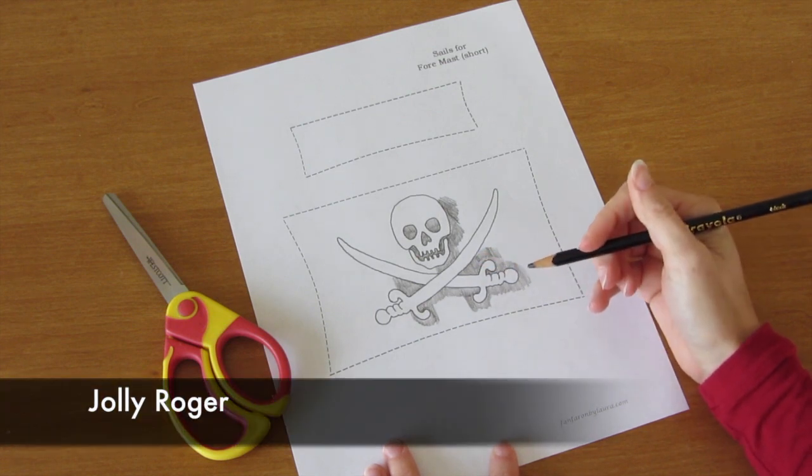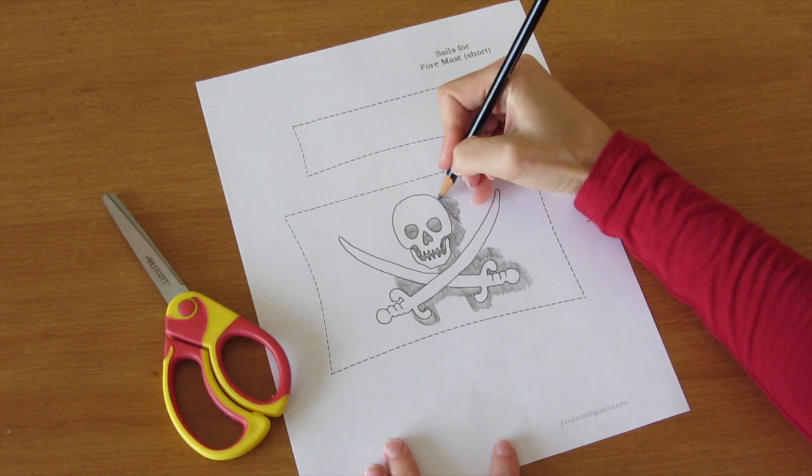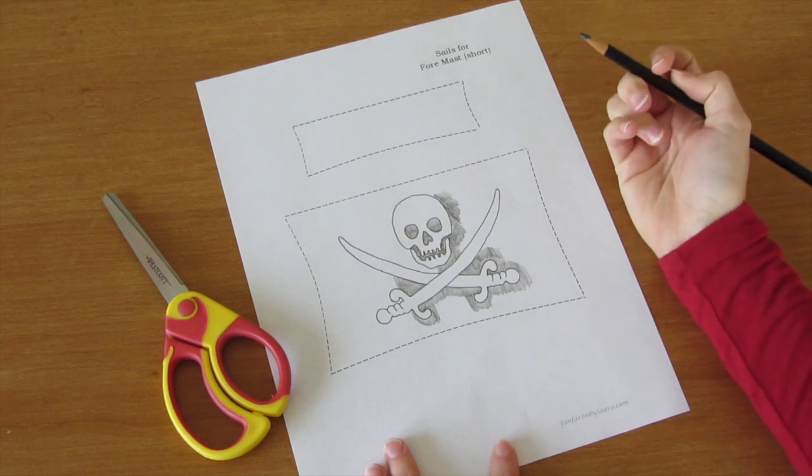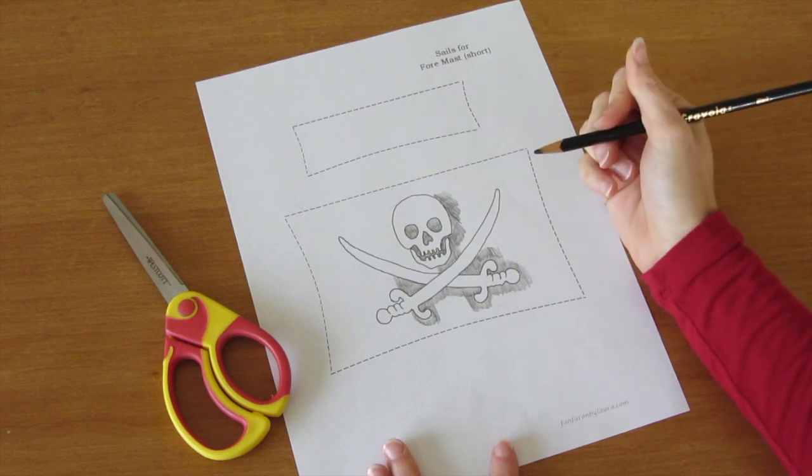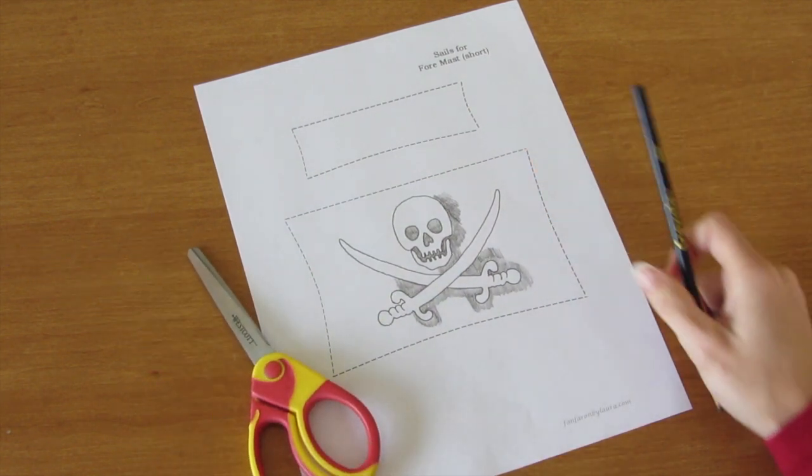Now, pirates didn't usually put the Jolly Roger on a sail because they wanted their ships to stay camouflaged until they were ready to attack. Then they ran a Jolly Roger up on a flag. So the colors used on the Jolly Roger were often white, black, or red. And when you're finished coloring, go ahead and cut out all of your sails on the dotted lines.